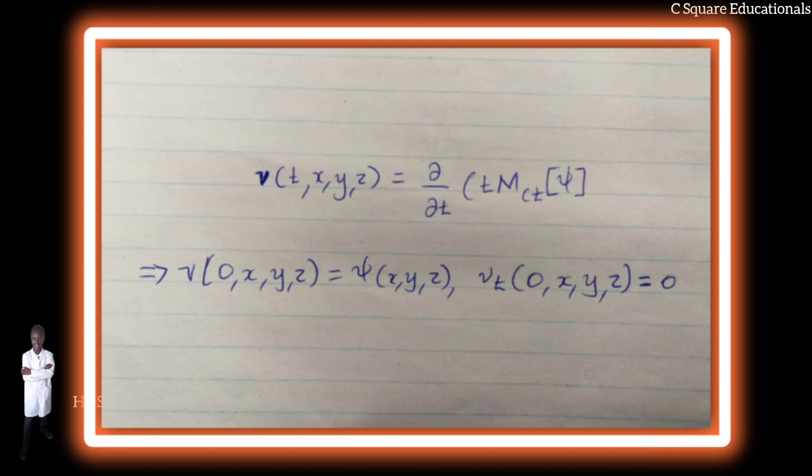They show that the solution at a given point P, given (t,x,y,z), depends only on the data on the sphere of radius ct that is intersected by the light cone drawn backwards from P.